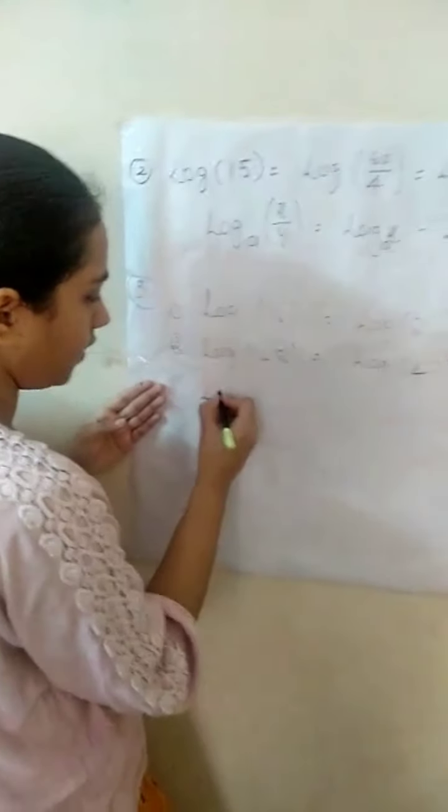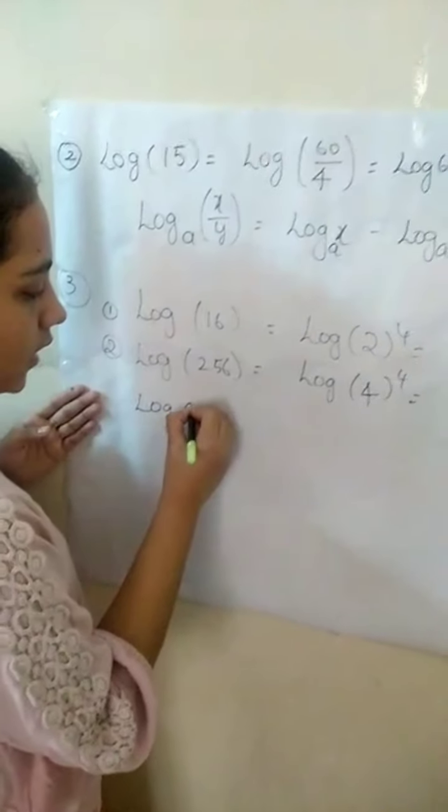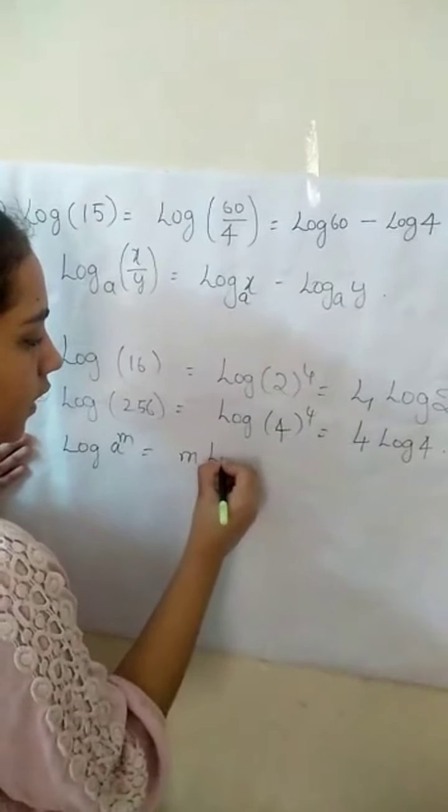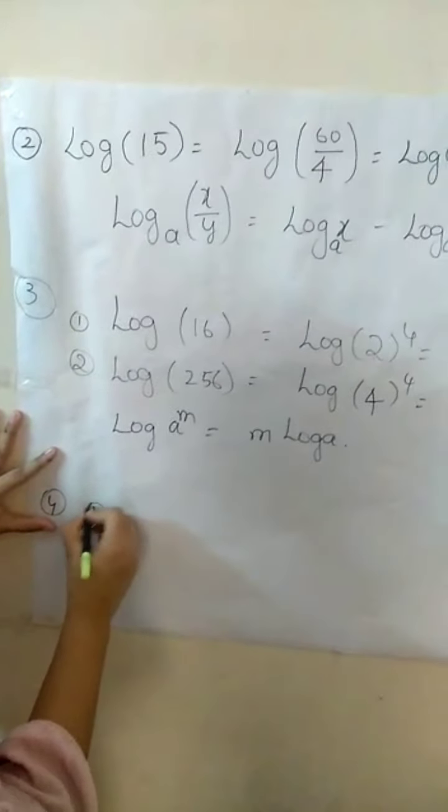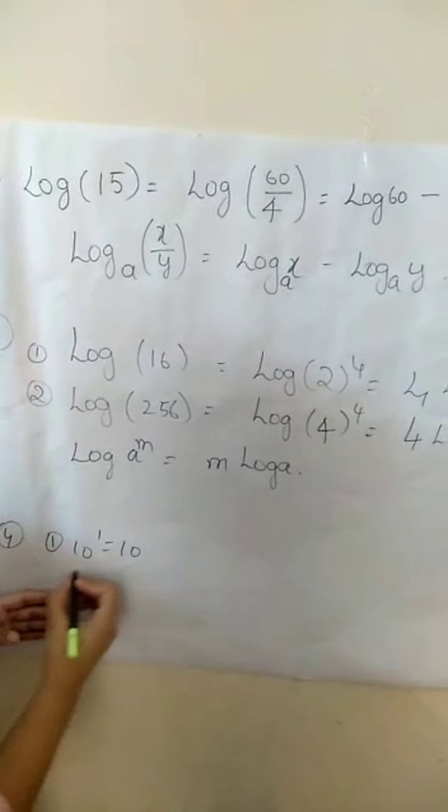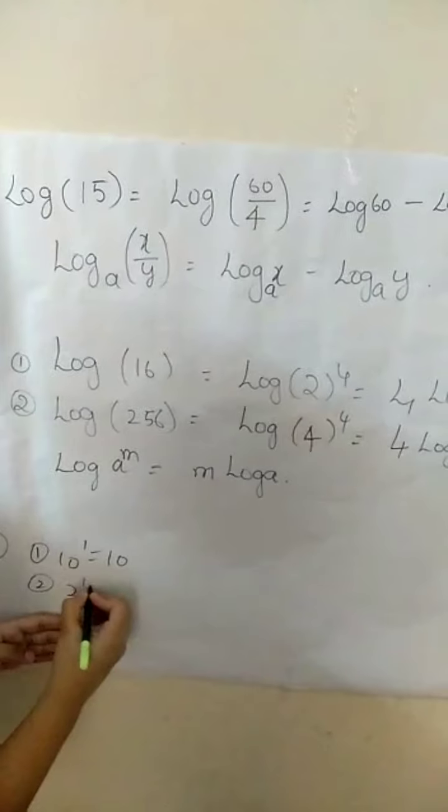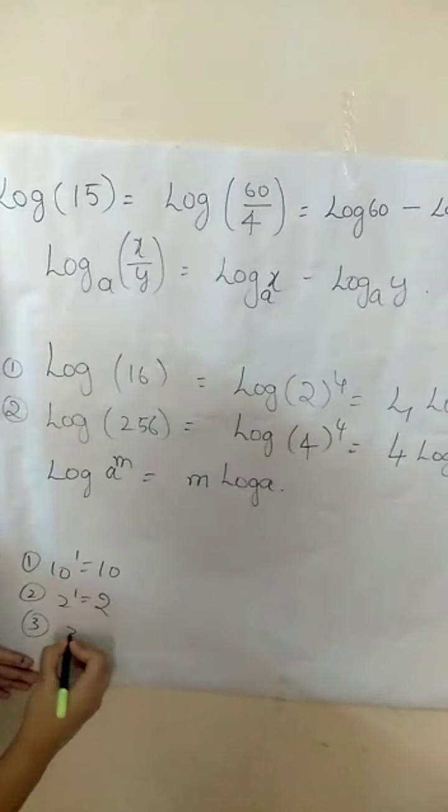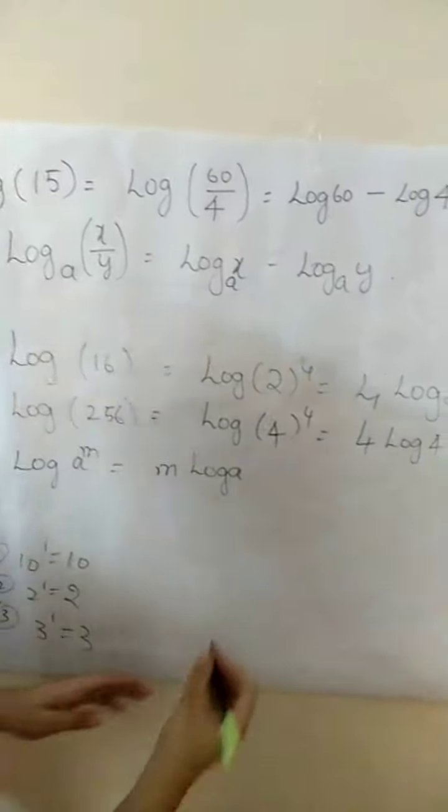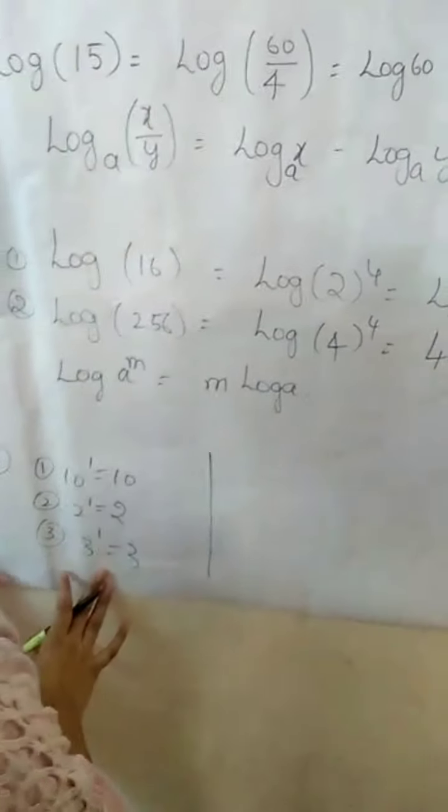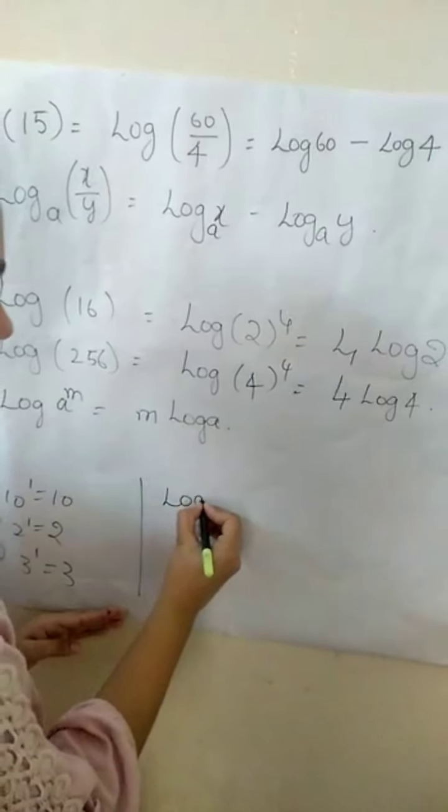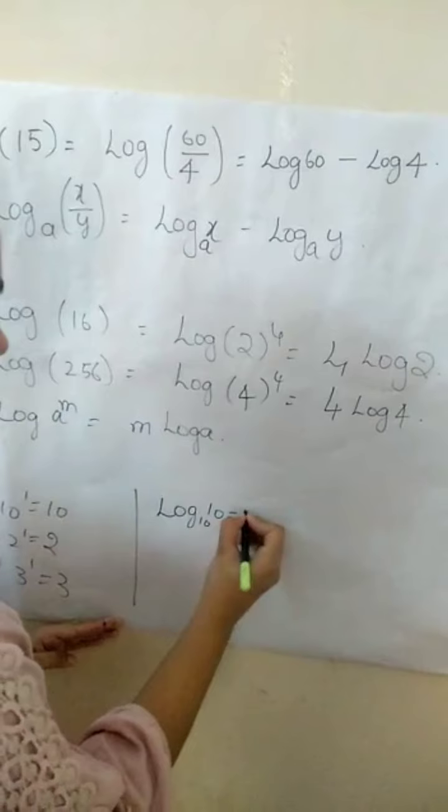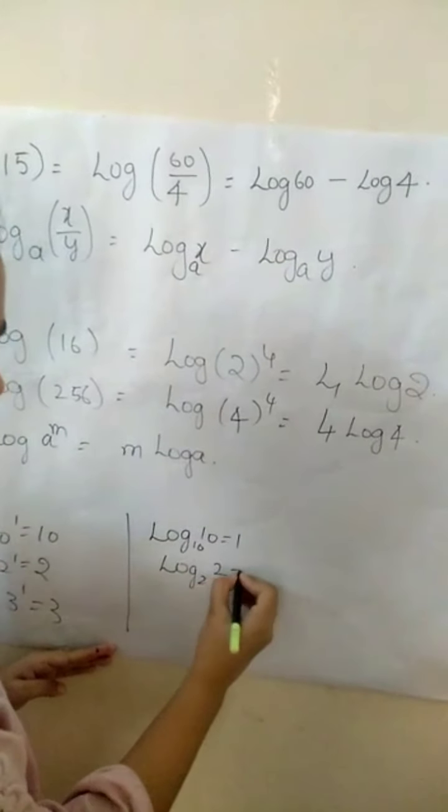Next, fourth property. First we write 10 power 1 equals 10. Second one: 2 power 1 equals 2. Third one: 3 power 1 equals 3. Now conversion of this exponential form into logarithmic form is log 10 base 10 equals 1, log 2 base 2 equals 1, log 3 base 3 equals 1.